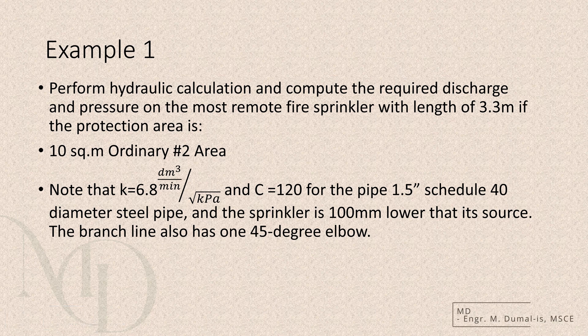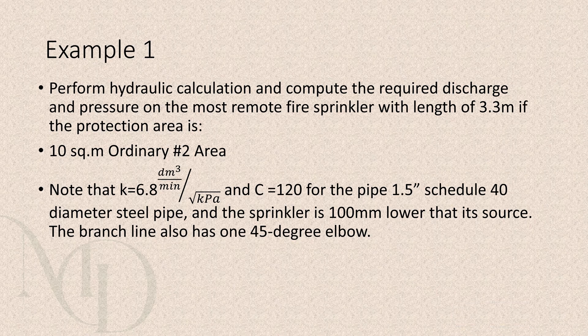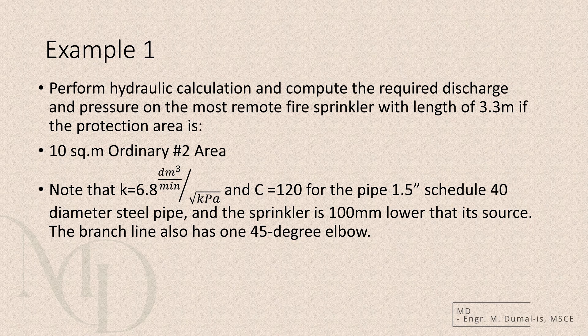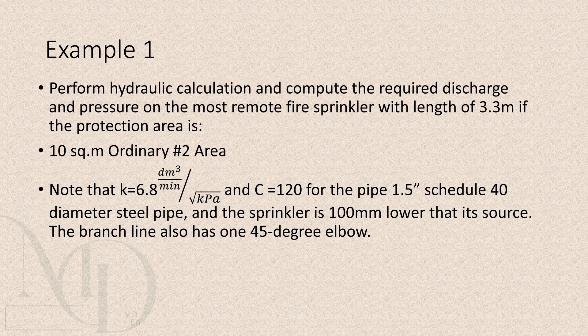Now, take note of the given data. The value of K is 6.8 cubic decimeters per minute per square root of kilopascal. The C value is 120 for a 1.5-inch schedule 40 diameter steel pipe. Also, the sprinkler is 100 millimeters lower than its source, and the branch line includes one 45-degree elbow. Alright, that's our given information. Moving forward, let's start the calculation.